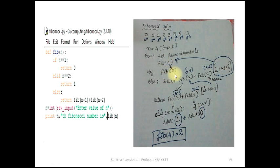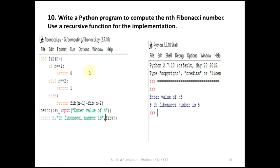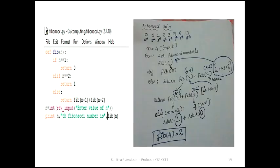It will return 2. So fib(4) is 2 and we print it out. After we finish, we print: the 4th Fibonacci number is 2. For n equal to 6, the 6th Fibonacci number is 5. If anything is unclear, pause or rewind the video.